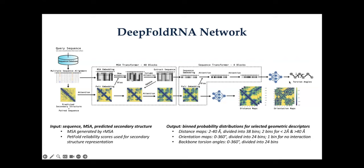We extract our sequence embedding — the first row of the MSA corresponding to the original query sequence — and process it using multiple self-attention mechanisms, one biased by the pair embedding and one not. From the sequence embedding we predict backbone pseudotorsion angles, and from the pair embedding we predict distance maps and orientation maps. We generate bin predictions for distance maps from 2 to 40 angstroms divided into 38 bins, plus two bins for less than 2 or greater than 40 angstroms. Orientations are divided into 15 degree increments with one bin for no interaction, and backbone torsion angles also use 15 degree bins.